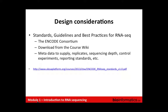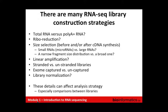For RNA sequencing design considerations, the ENCODE Consortium formed a committee and published recommendations covering what metadata to supply, how many replicates to use, what sequencing depth to use, what control experiments to include such as spike-ins, and what standards to use for reporting data. It's a good read for understanding what the ideal experiment should look like. There are many RNA-seq library construction strategies without much field consensus, partly because it still depends on experimental goals and is still being improved.